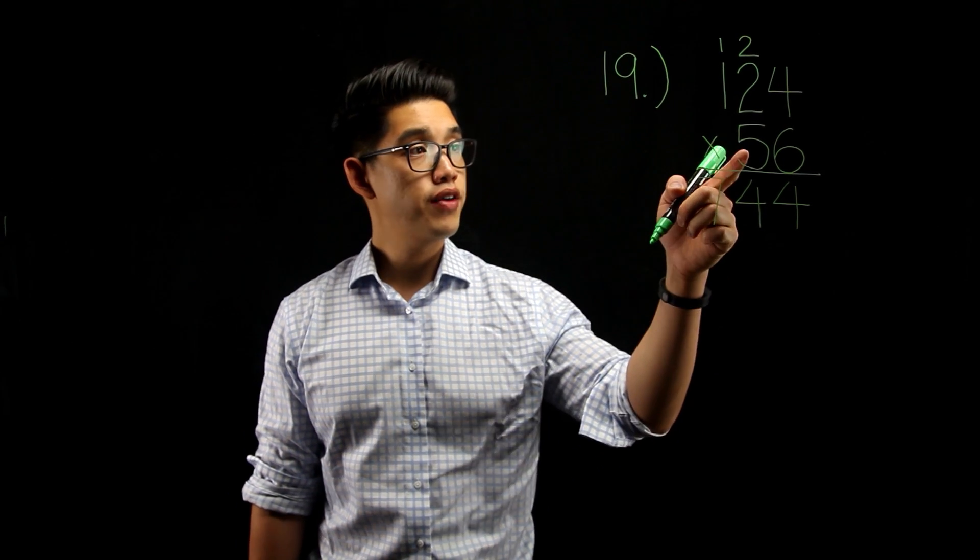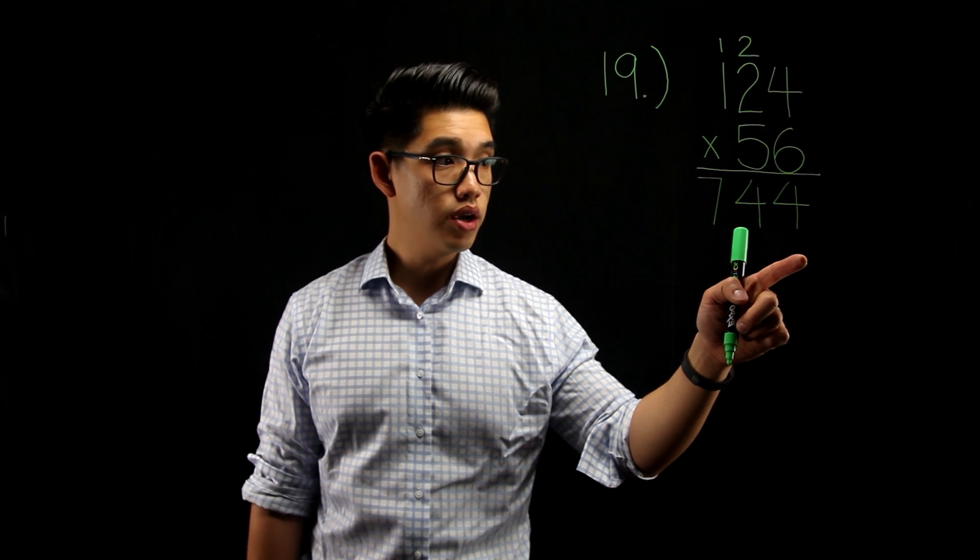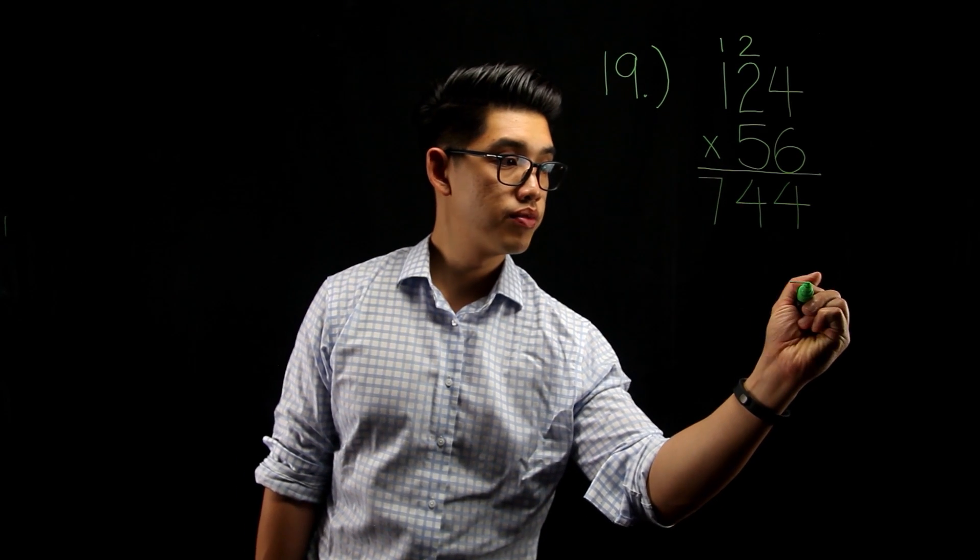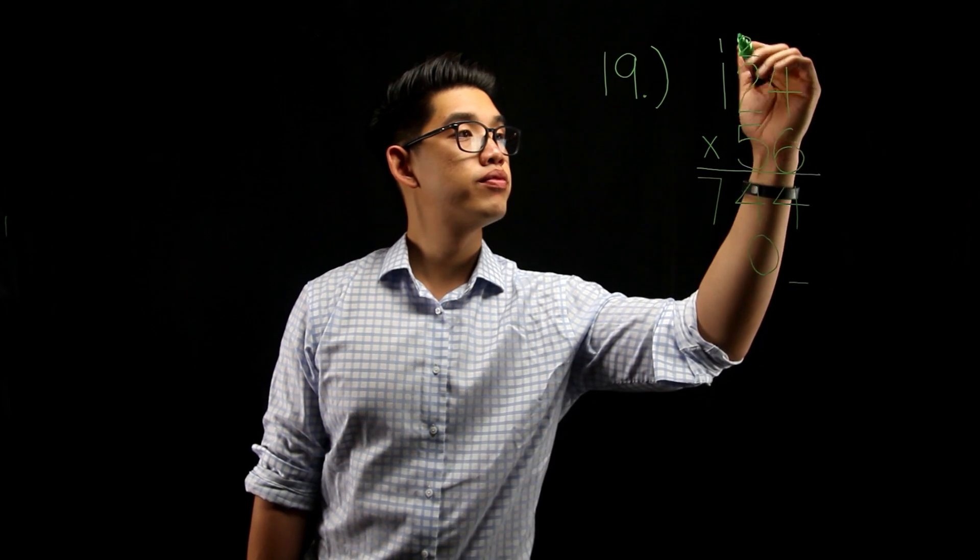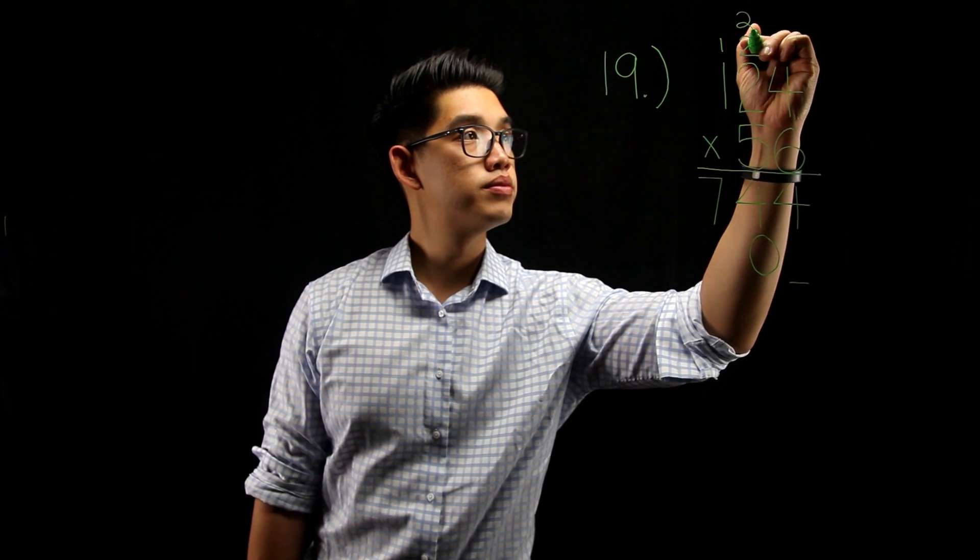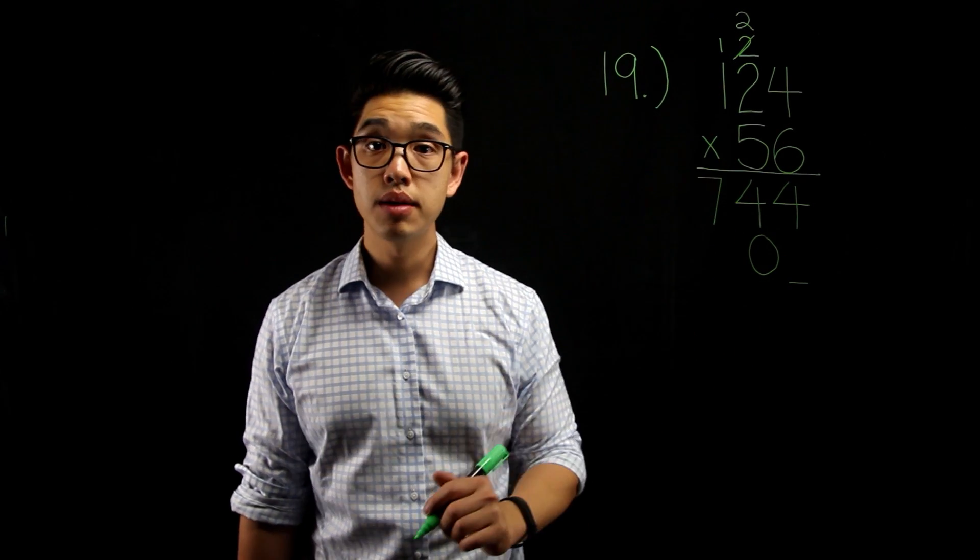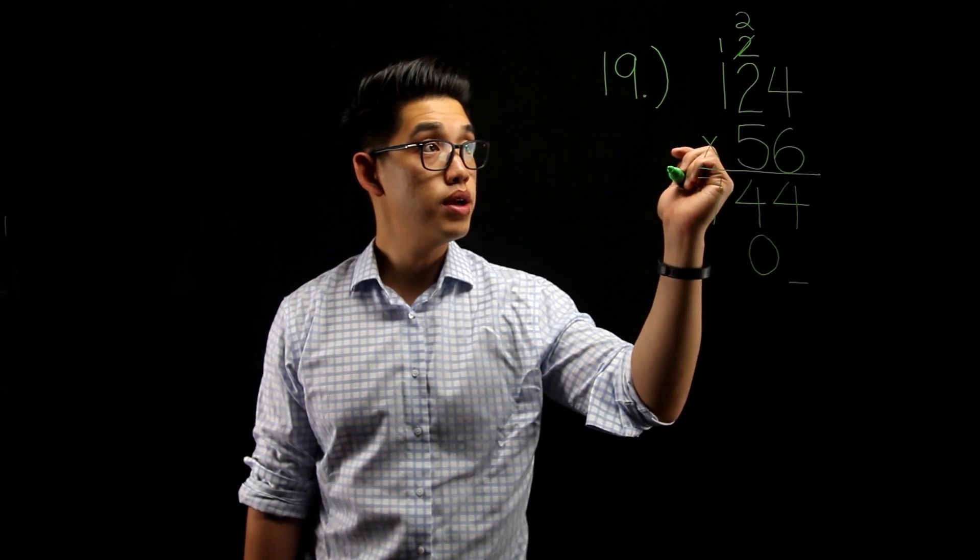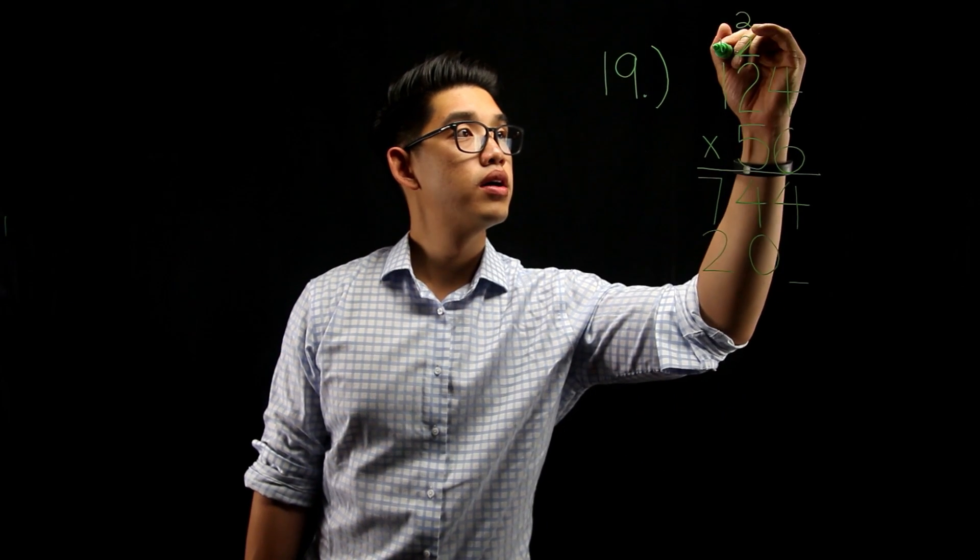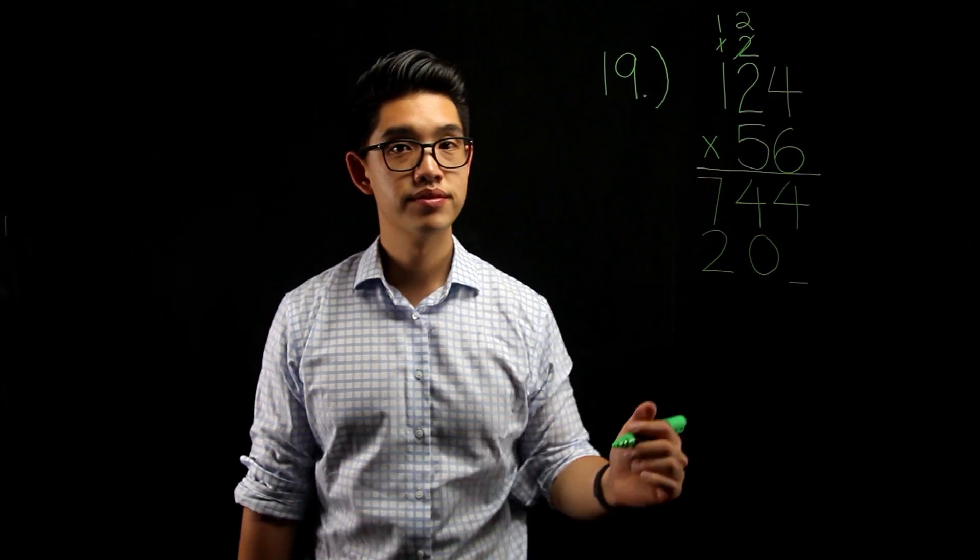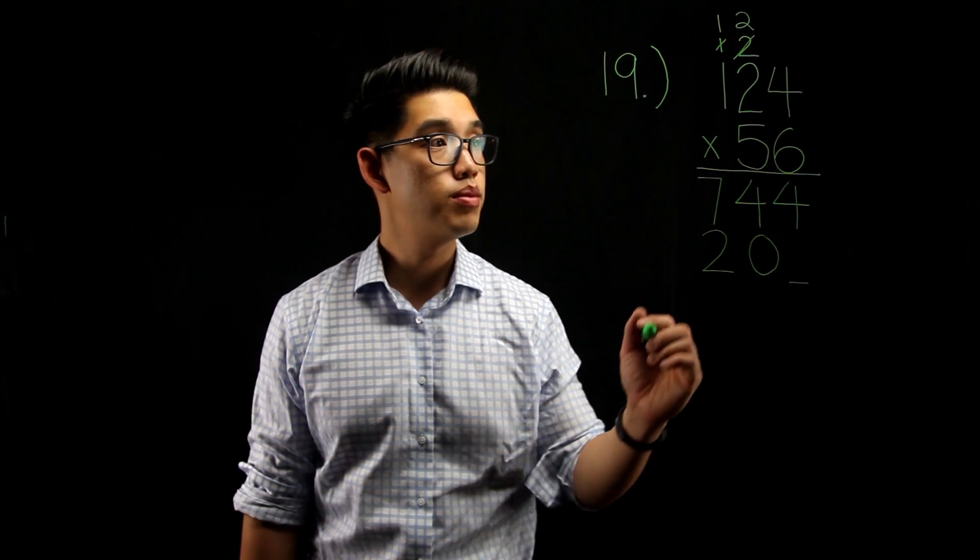Now, you're going to multiply 5 to the numbers on top. 5 times 4, that's going to be 20. But, instead of putting the 0 here, we're going to leave a space here and put the 0 here for 20, and then put a 2 on top there. 5 times 2, that's going to be 10, plus another 2 on top here, that's going to be 12. Write 2 here, put a 1 here. And then, 5 times 1, that's 5, plus another 1, that's going to be 6.